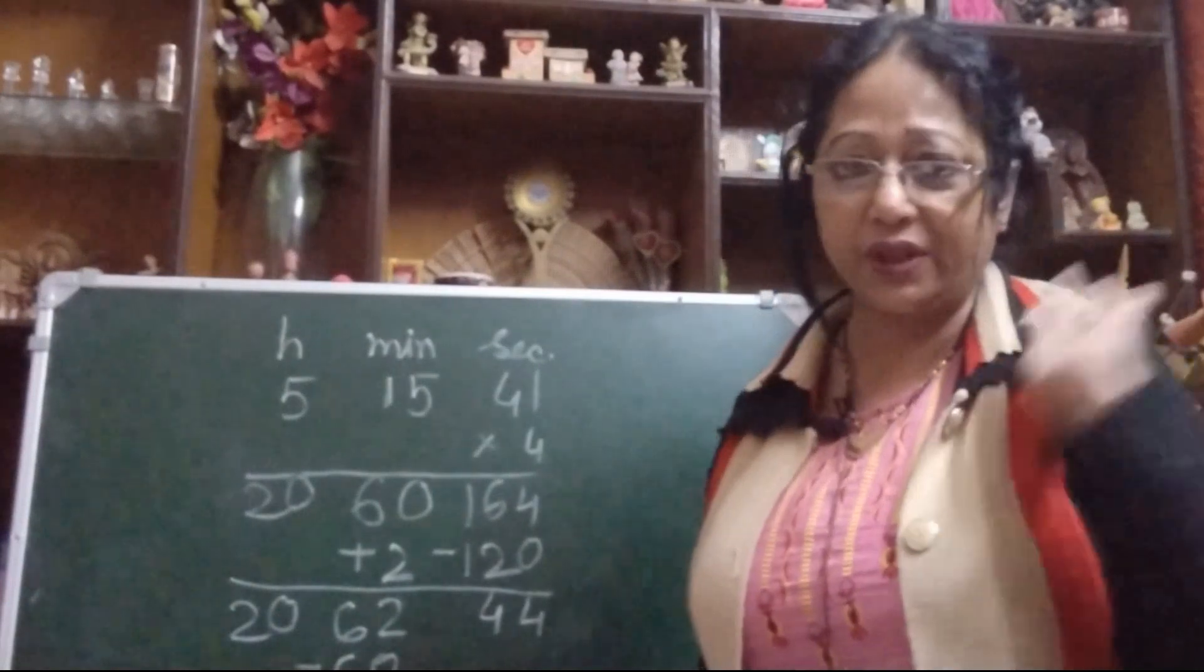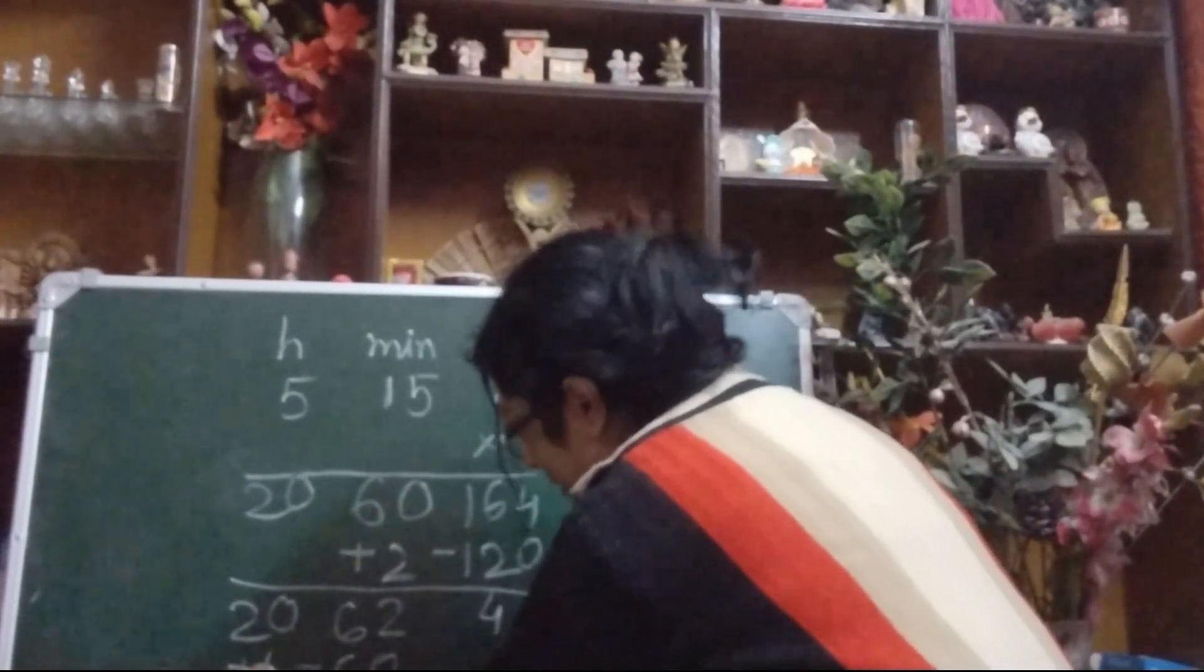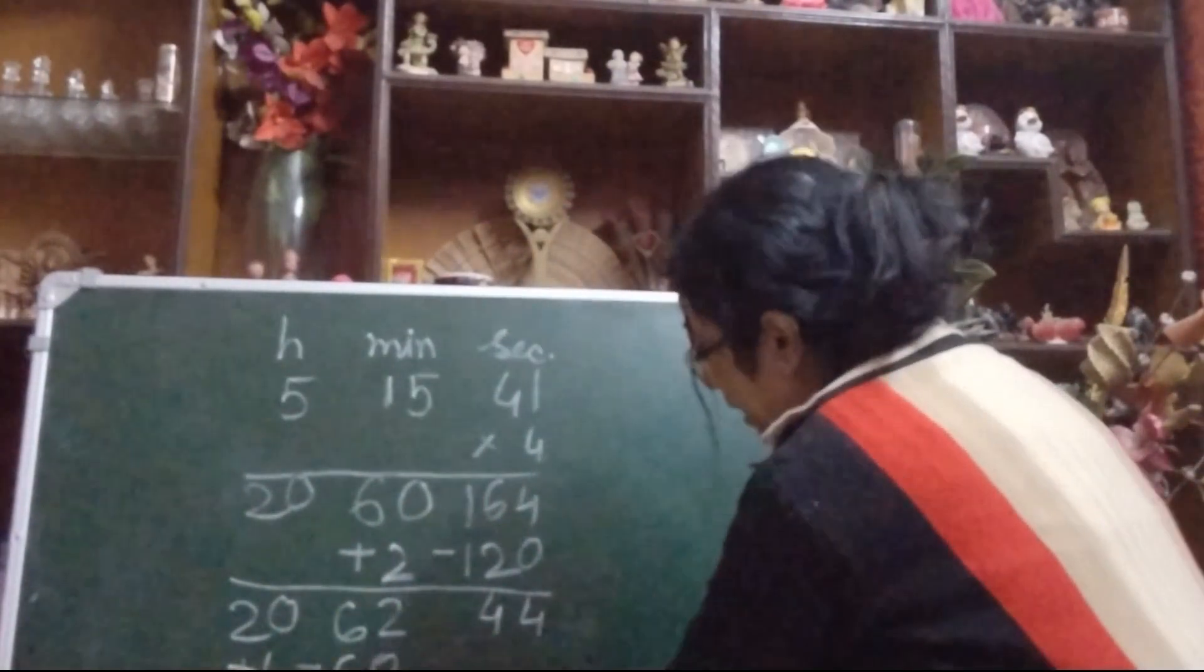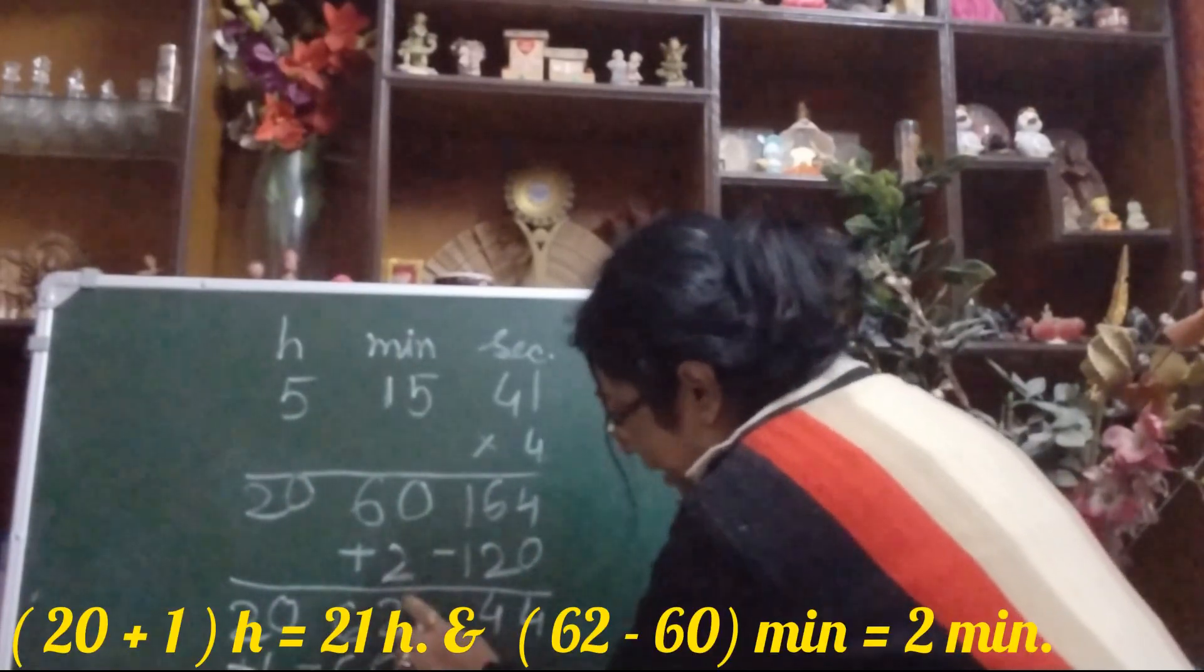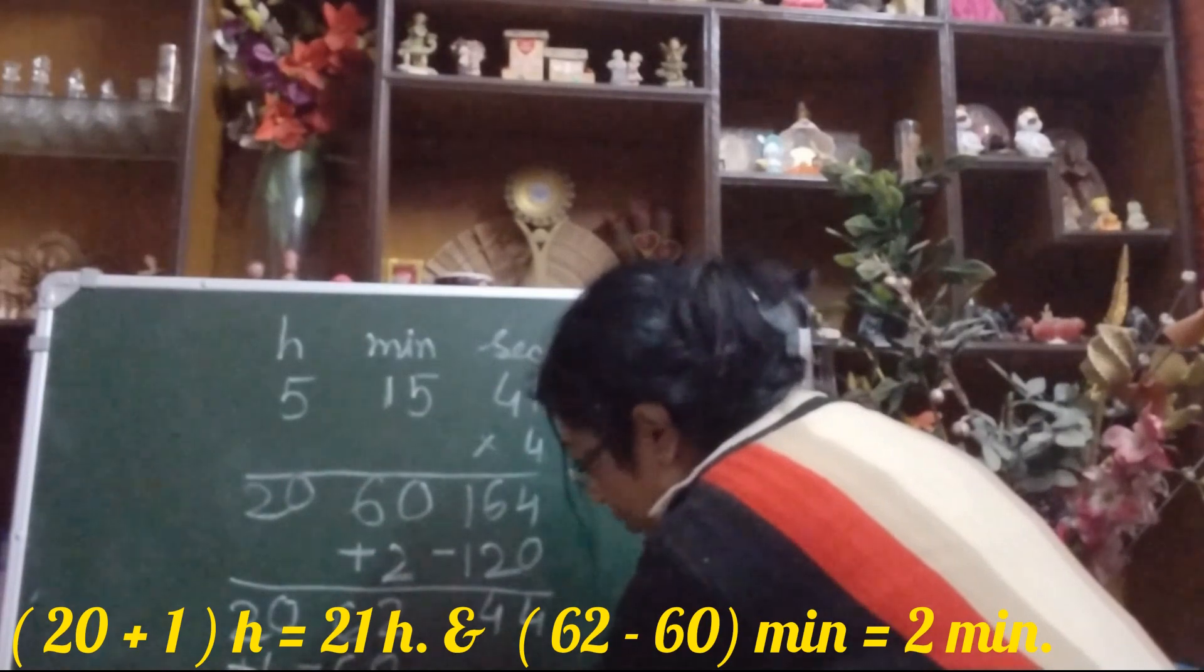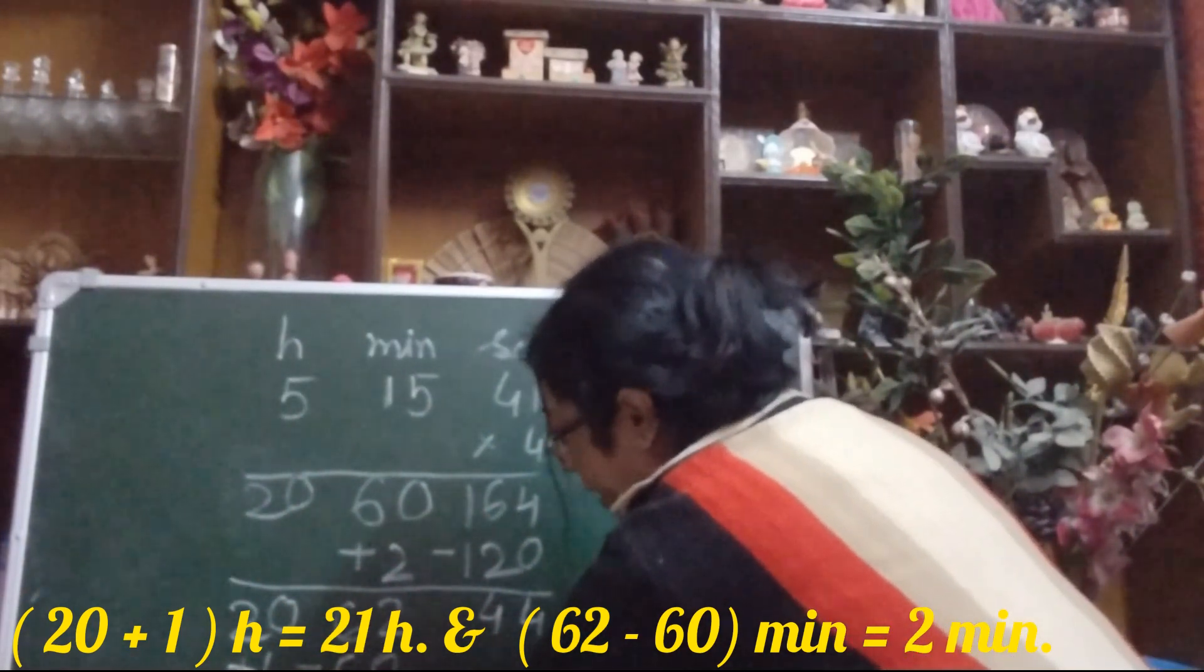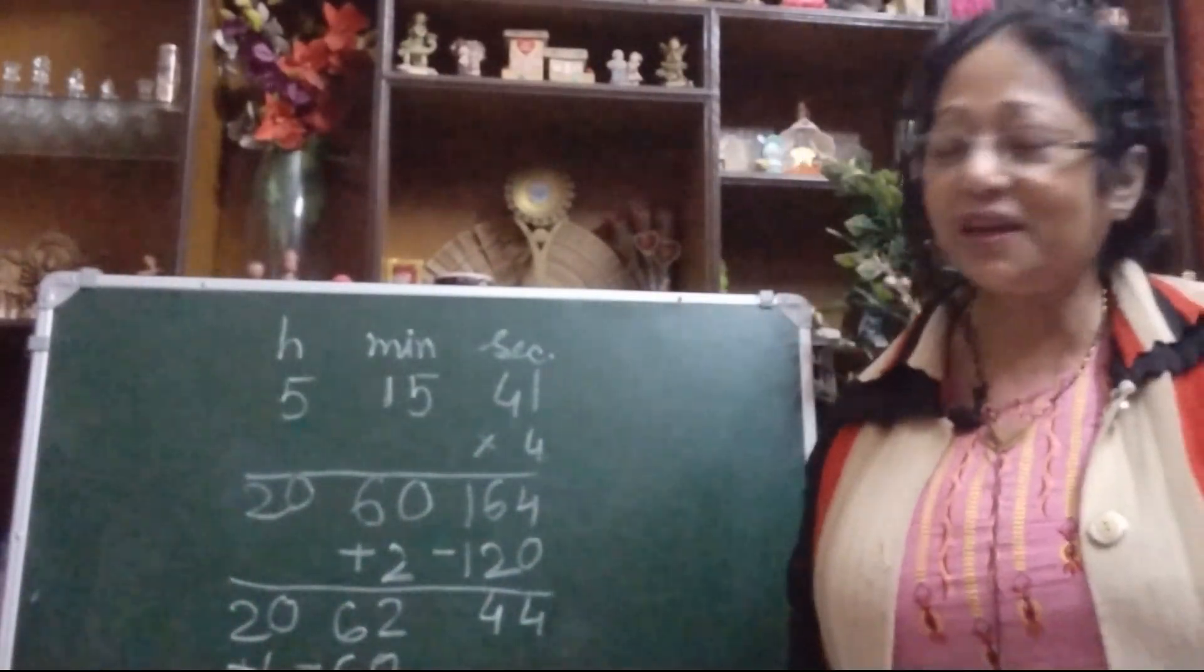We do not keep anything with us. This is simple. Return back to 20 hours plus 1 hour. Now do the subtraction: 2 minus 0 means 2, 6 minus 6 is 0. Now 20 plus 1 is 21. So what is our final answer? Our final answer is 21 hours, 2 minutes, and 44 seconds.